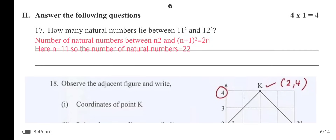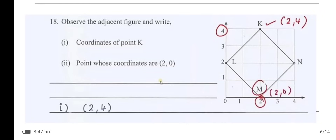How many natural numbers lie between 11² and 12²? The number of natural numbers between n² and (n+1)² is equal to 2n. Here n = 11, so the number of natural numbers is equal to 22.